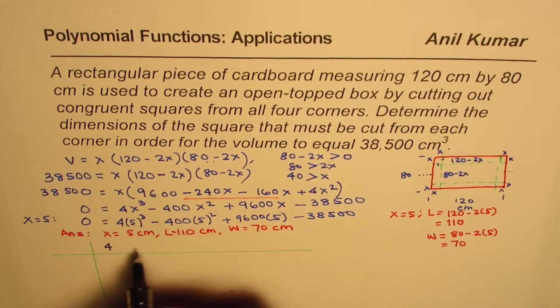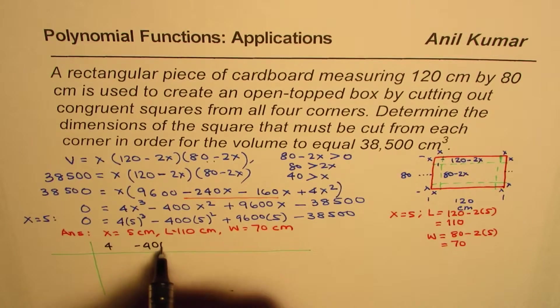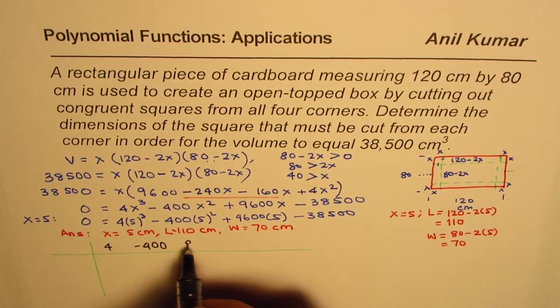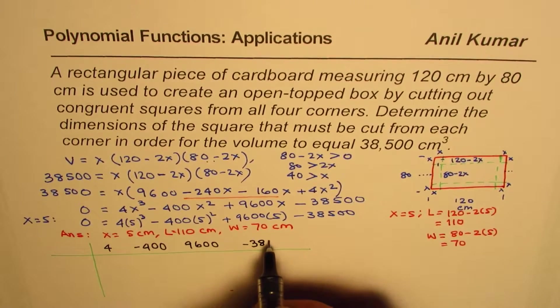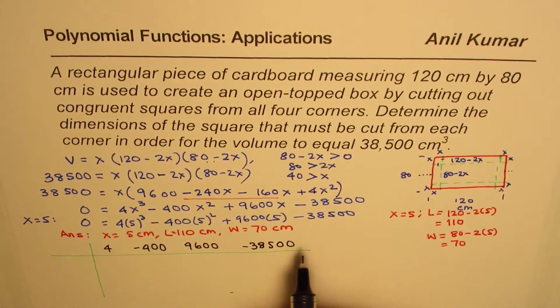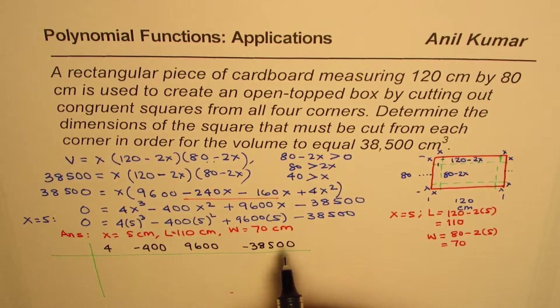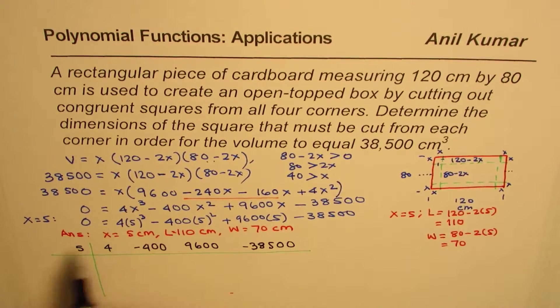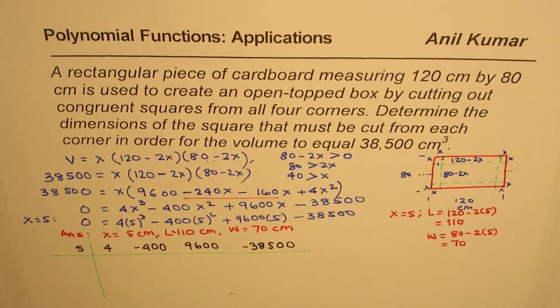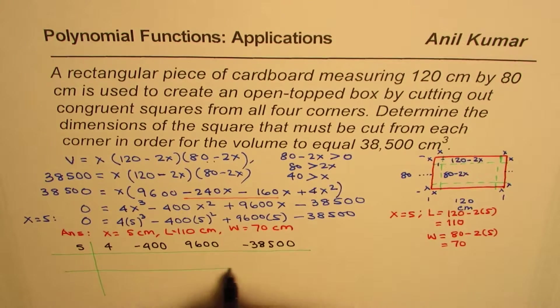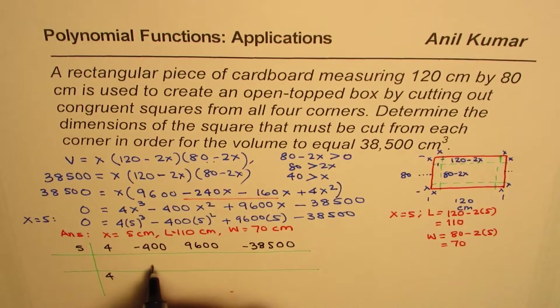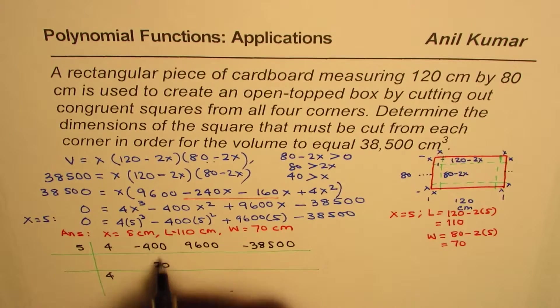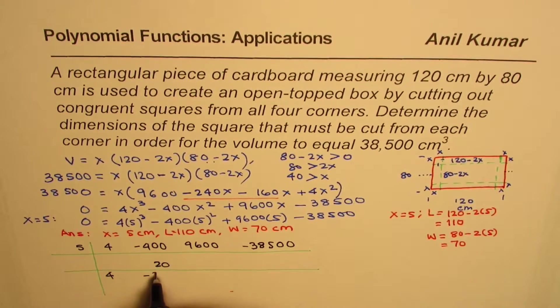4X cubed, so we'll get 4 here, minus 400, plus 9600, and then minus 38,500. So X minus 5 gave us the result, so 5 is the number which makes that 0, we'll divide by 5. So let's perform the synthetic division steps. I hope you remember. First step is bring down this 4, multiply 5 by 4, we get 20, add them up, so get minus 380.